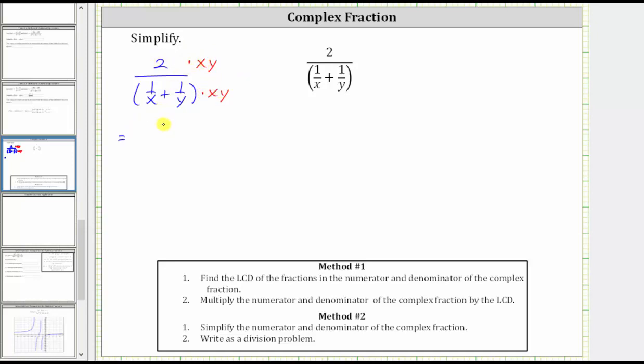On the top, we have two times xy, which is two xy. On the bottom, we distribute xy, and let's show that distribution. We have one over x times xy, and then plus one over y times xy.